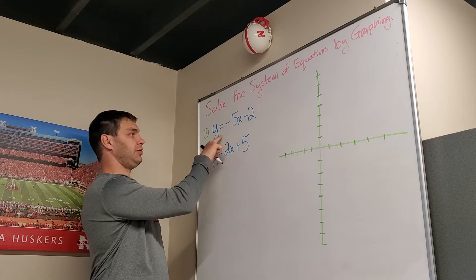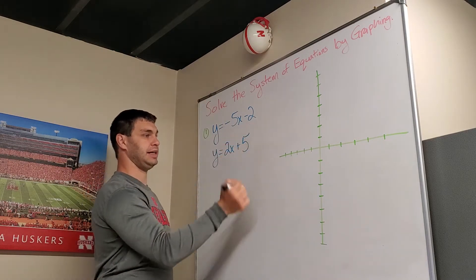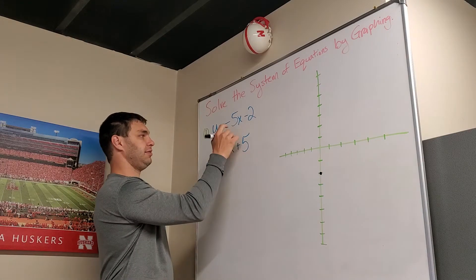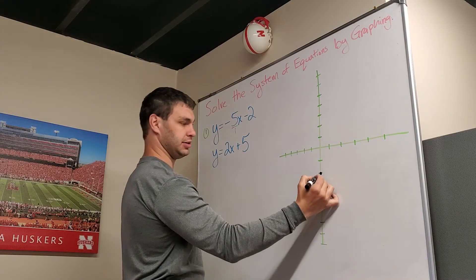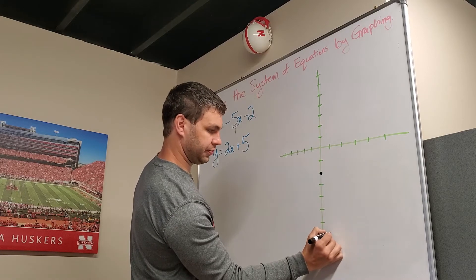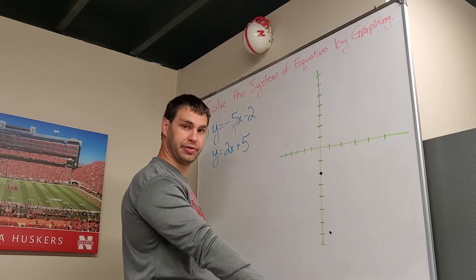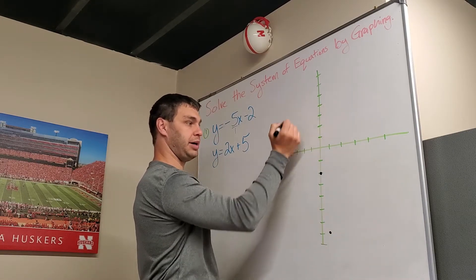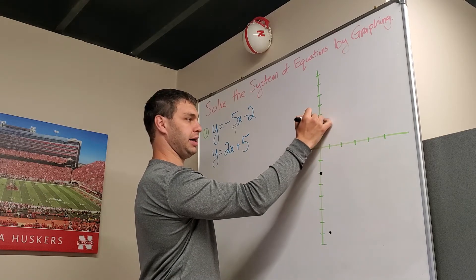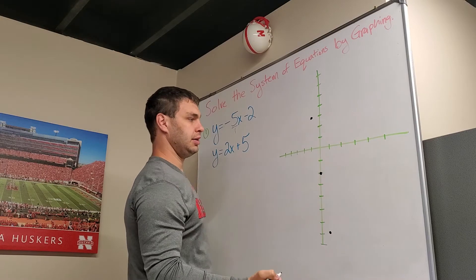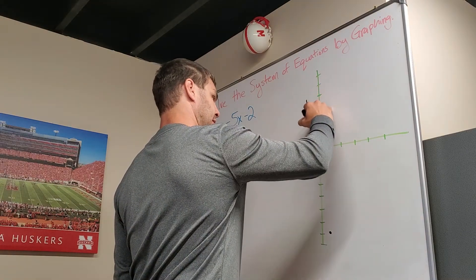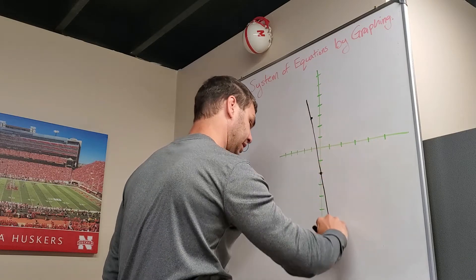I'm going to start at my b. This is in y equals mx plus b form. My b is negative 2 on the y-axis. And it wants me to go down 5 and over 1, right? So down 1, 2, 3, 4, 5, and then to the right 1. Okay, if I went again, I'd be off the graph. So instead, I'm going to go up 5 and back 1. Up 1, 2, 3, 4, 5, and back 1 right here. Okay, I'm going to connect those dots as best as I can freehand.